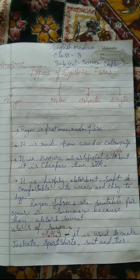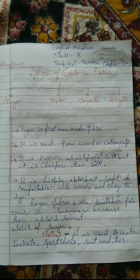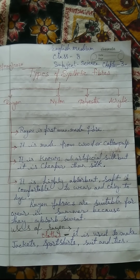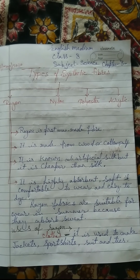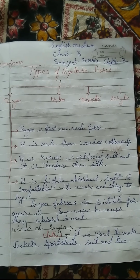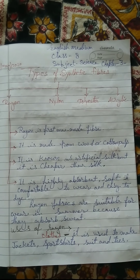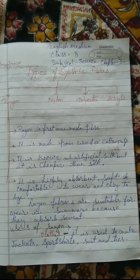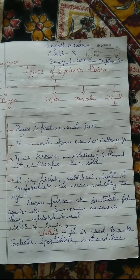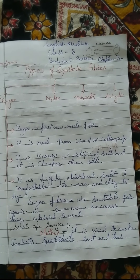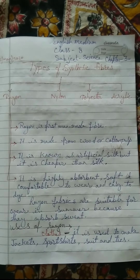Rayon is cheaper than silk. It is highly absorbent, soft and comfortable to wear, and easy to dye. Rayon fabrics are suitable for wear in summer because they absorb sweat. Uses of rayon clothes: it is used to make jackets, sports shirts, suits, and ties.